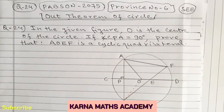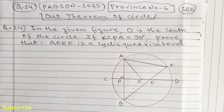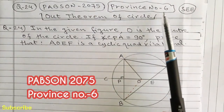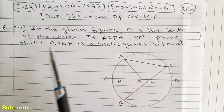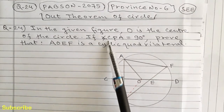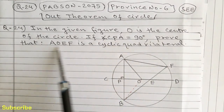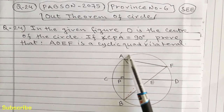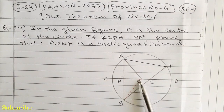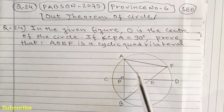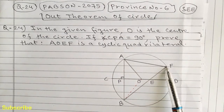Hello dear students, welcome to Corner Mass Academy. Today in this video we are going to discuss one of the most important questions asked in the 2075 Province Number 6 exam, question number 24. The question states: in the given figure, O is the center of the circle. If angle CPA is equal to 90 degrees, prove that AOEF is a cyclic quadrilateral.